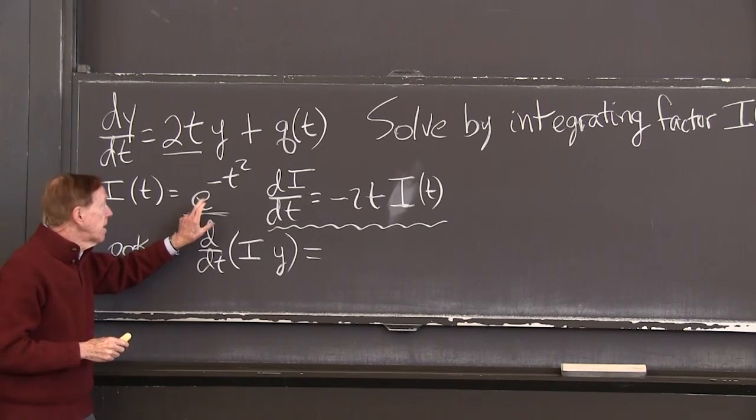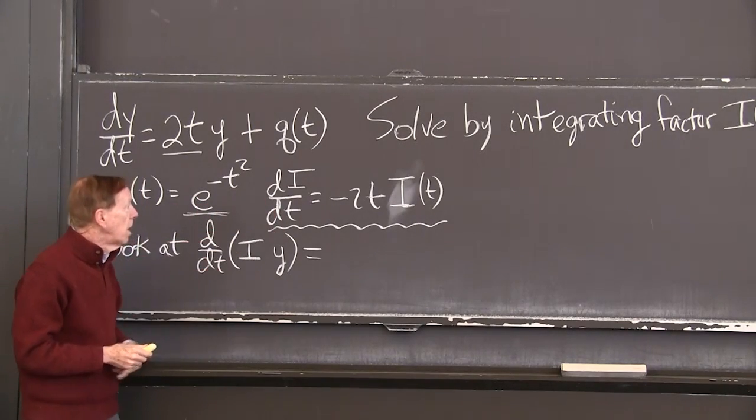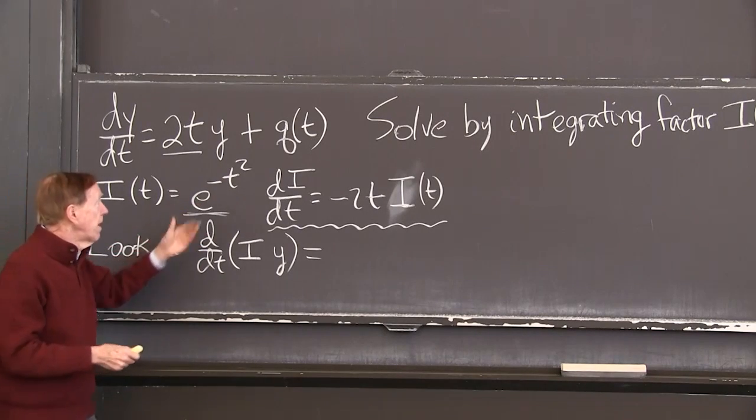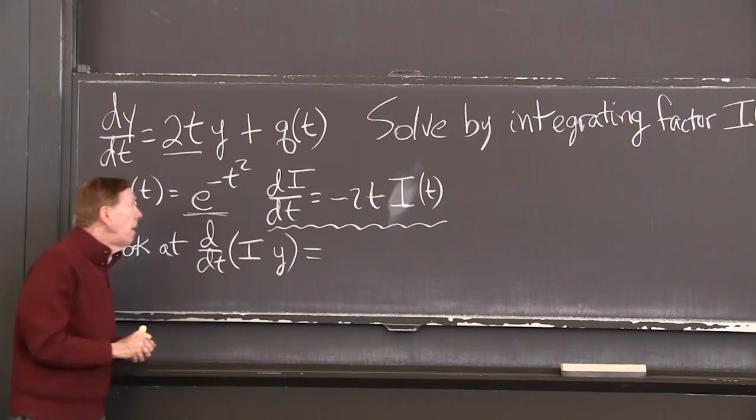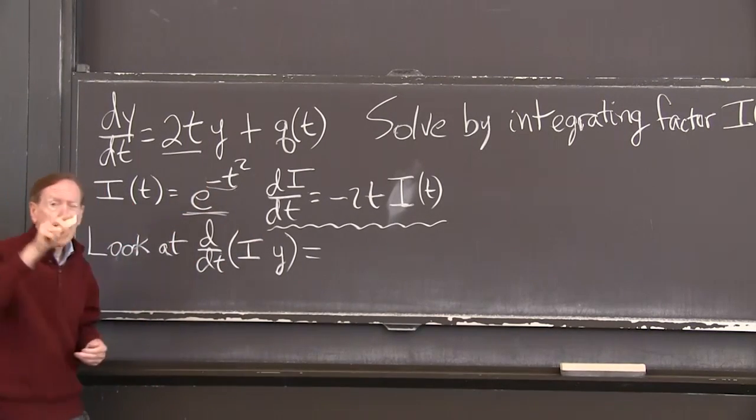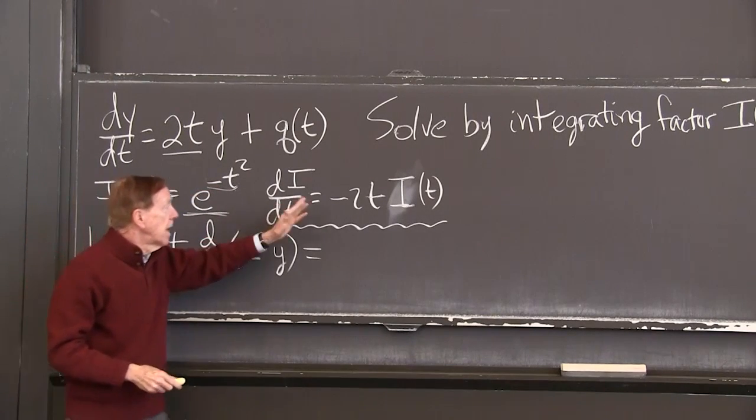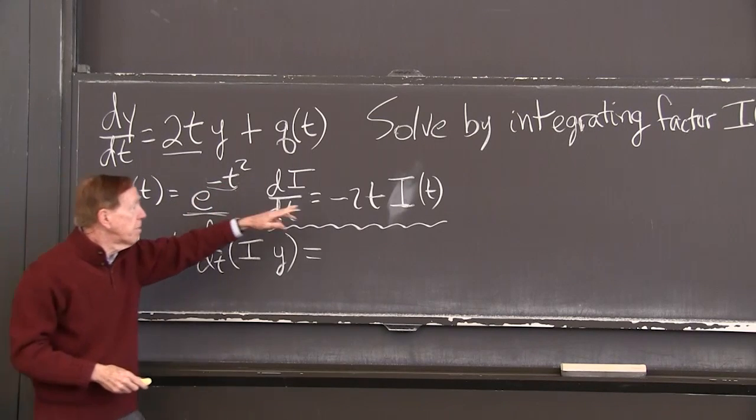The reason that's the right choice is that the derivative of this, you remember how to take the derivative by the chain rule. The derivative will be the same e to the minus t squared, the same i, times the derivative of the exponent. And the derivative of that exponent is minus 2t. Minus t squared becomes minus 2t.